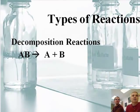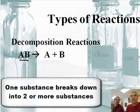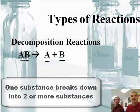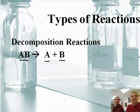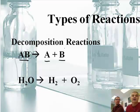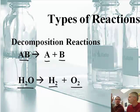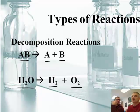In a decomposition reaction, you have one substance that turns into two or more — usually two, but it could be more. So AB turns into A and B. An example of that would be the reverse reaction we just talked about: water can be decomposed into hydrogen and oxygen. This is the exact reverse of a synthesis or combination reaction. If you flip it around, you have a decomposition reaction.